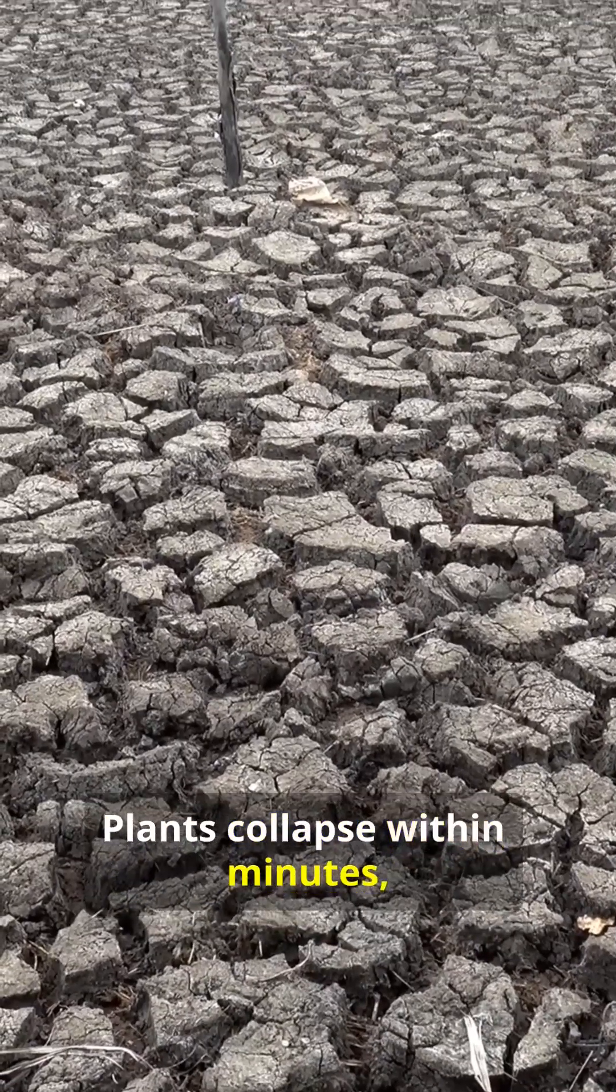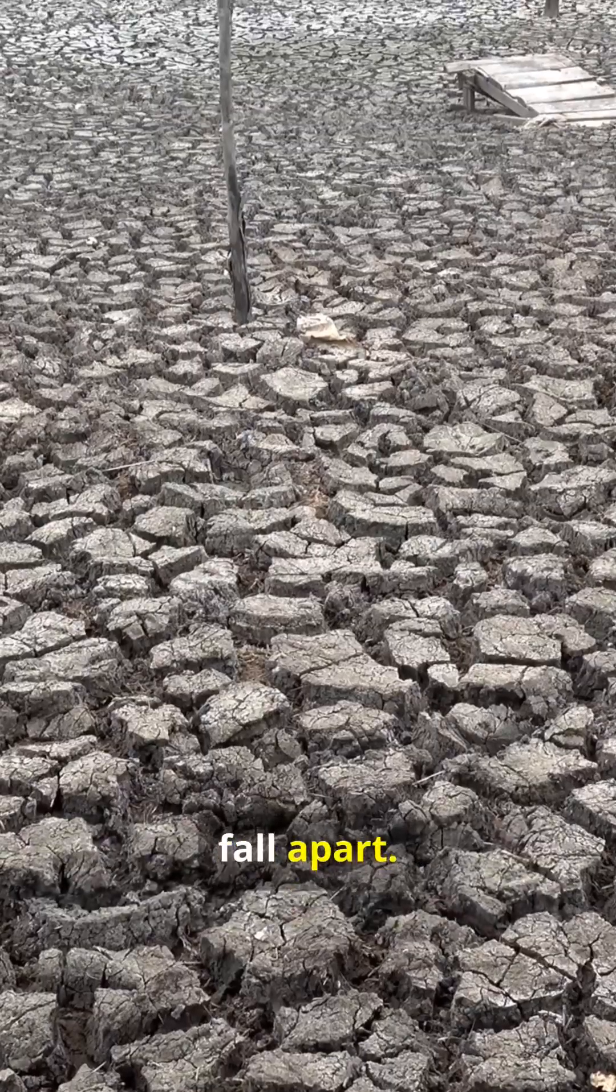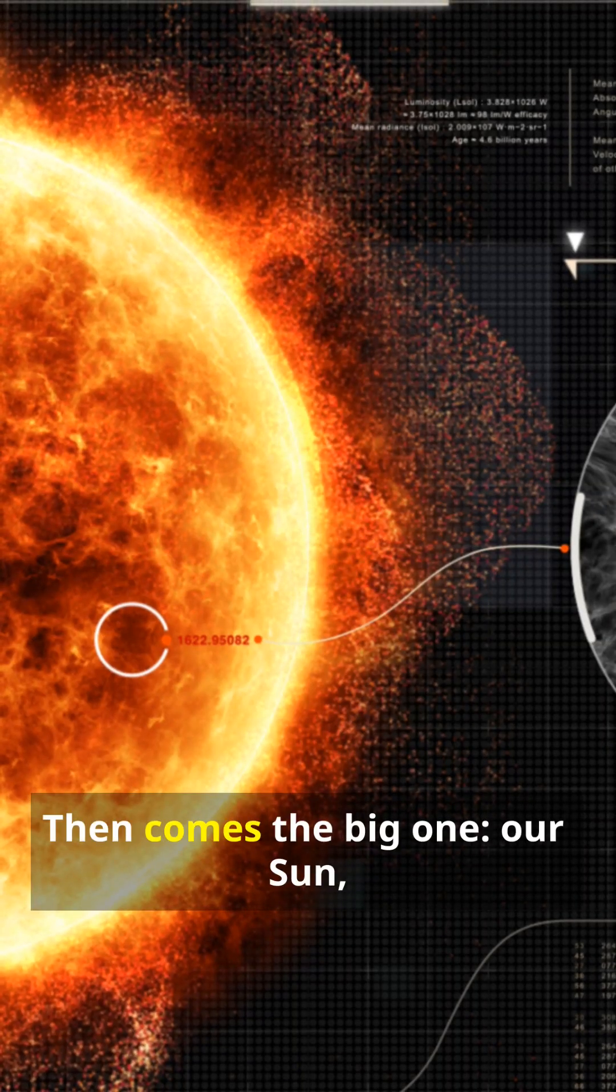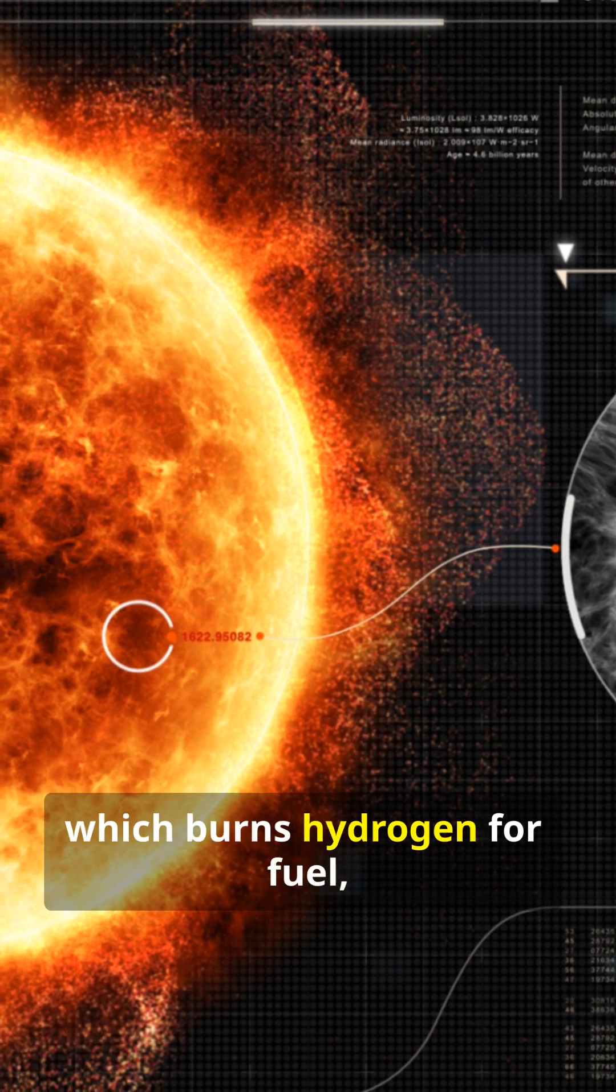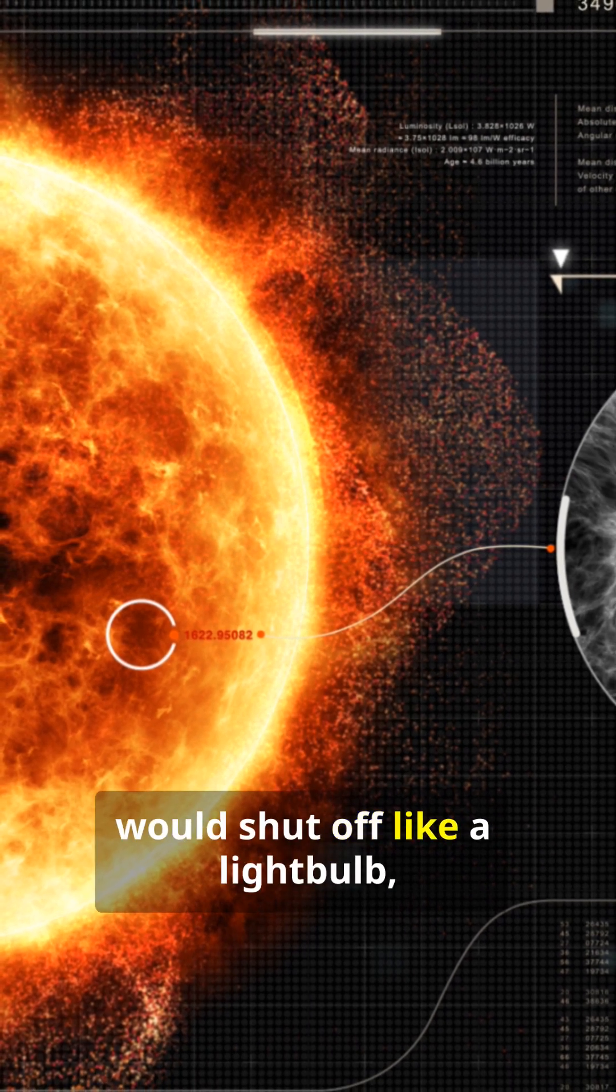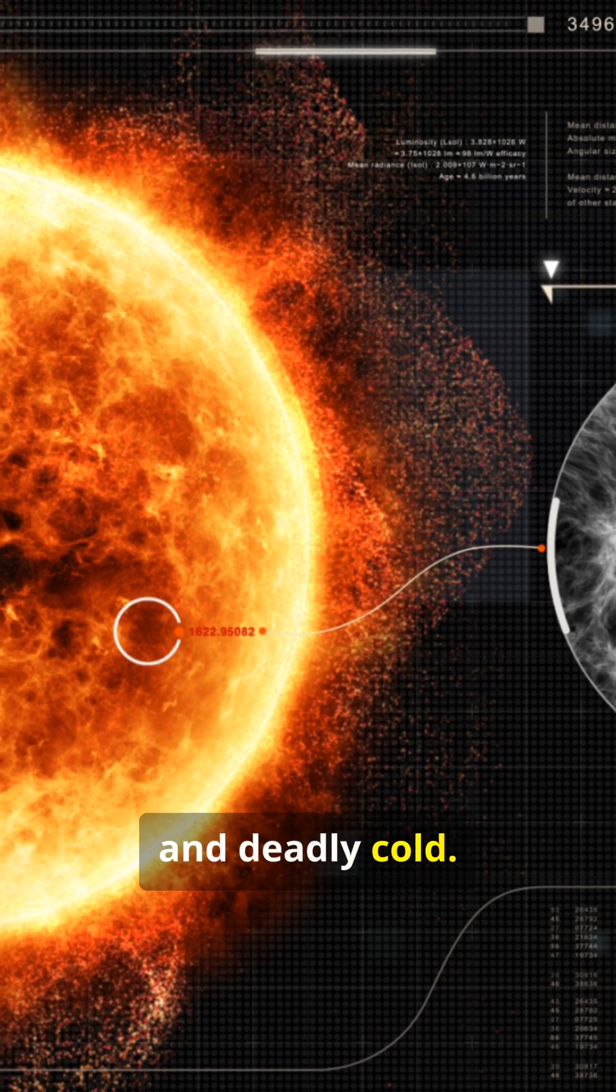Plants collapse within minutes, animals follow, and the atmosphere begins to fall apart. Then comes the big one. Our sun, which burns hydrogen for fuel, would shut off like a light bulb, plunging Earth into darkness and deadly cold.